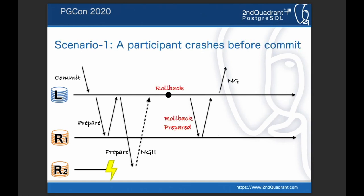In this scenario, after the local node prepared one transaction on remote 1, remote node 2 fails to prepare its transaction — let's say remote node 2 crashed before doing the prepare. Since the local node failed to get an OK response from remote 2, it turns to rollback. It rolls back the local transaction and sends a rollback-prepared message to remote node 1. As a result, all transactions are successfully rolled back.